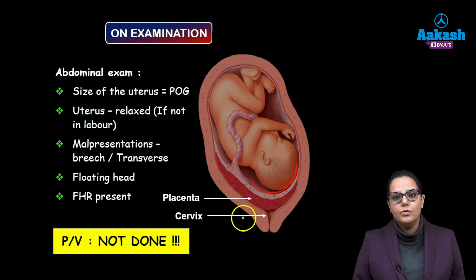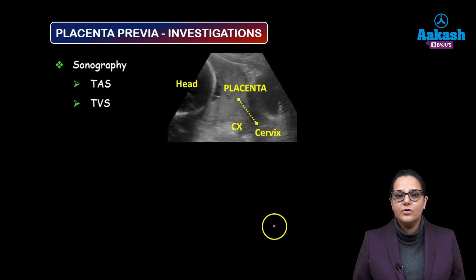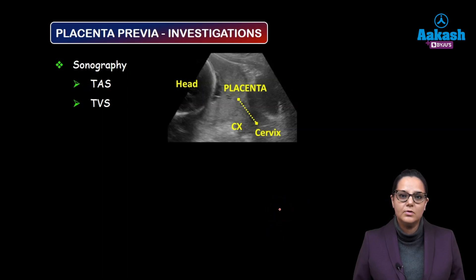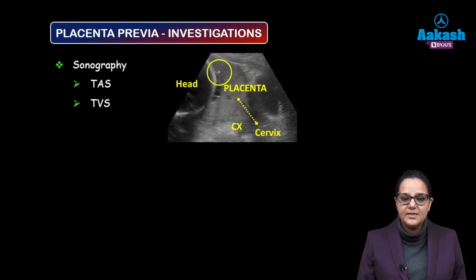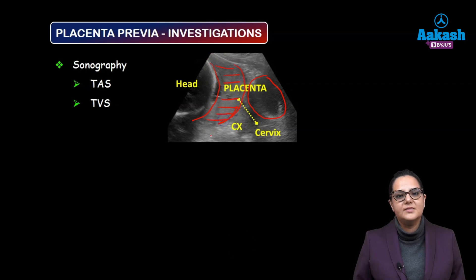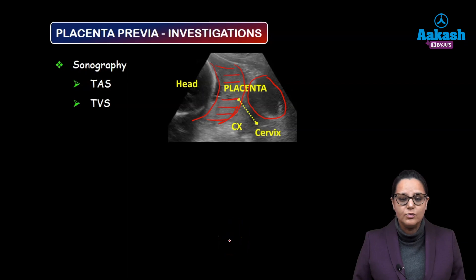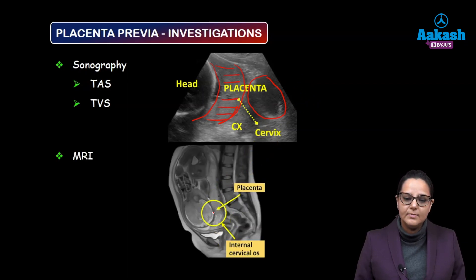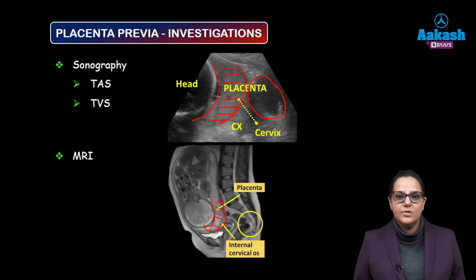In these patients, we do not do a per-vaginal examination. For investigations, when the patient comes to us, we ask for her ultrasonography report. If she does not have one, we go for a transabdominal sonography, where we can see the head of the baby, the bladder filled with urine, and the placenta covering the lower segment, confirming that the placenta is low-lying. If the transabdominal ultrasound is inconclusive, then we go for MRI, which will clearly show the placenta lying in the lower segment. MRI is only done when the ultrasound is inconclusive.